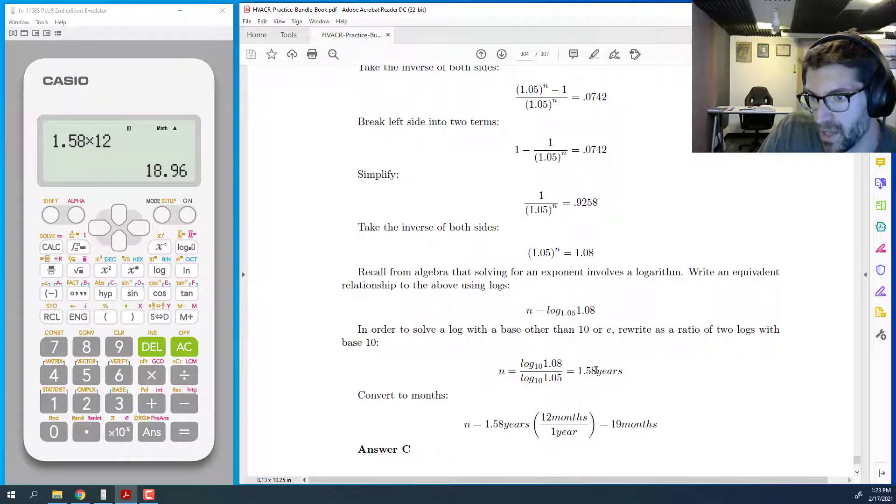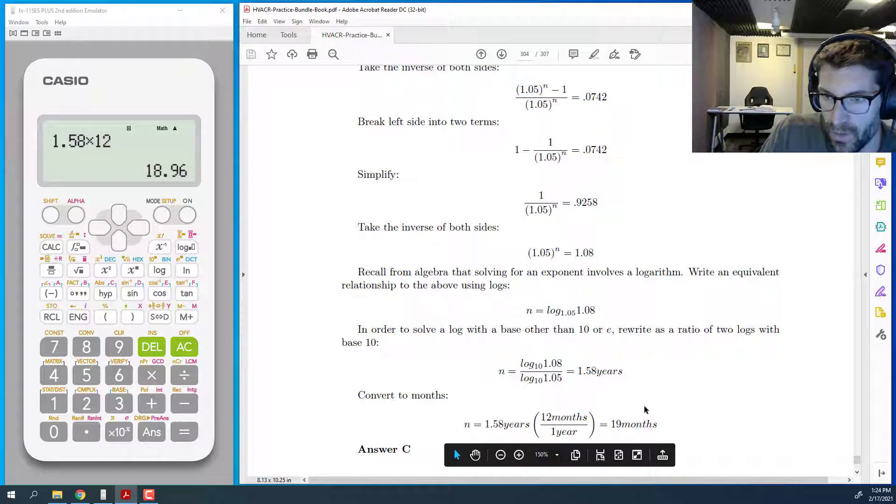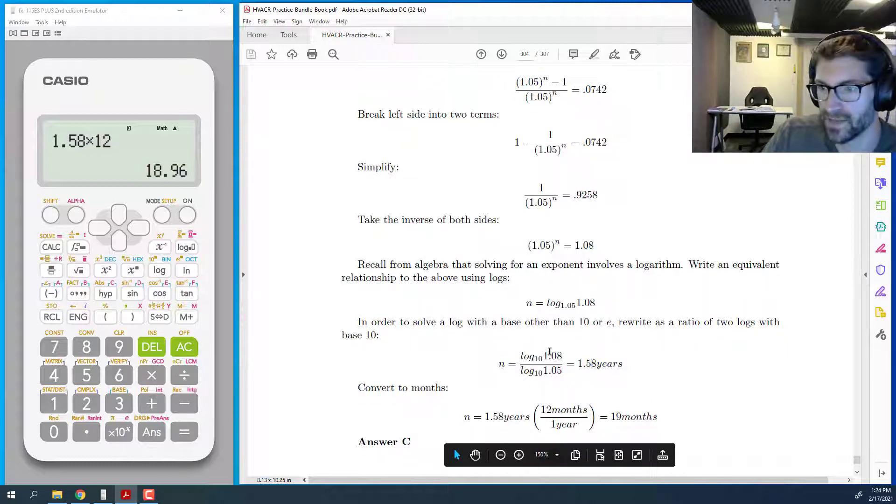which is the same answer that we got using the solver on the calculator. And, again, that's in years, so you have to multiply by 12 to get months. And those answer choices should reconcile.